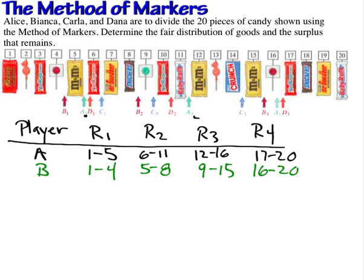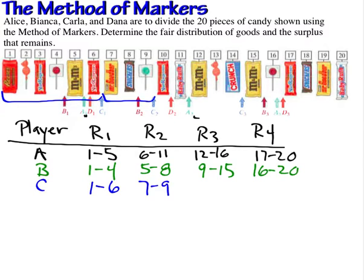Now we look at the next player, Carla. Carla's markers for round 1 include items 1 to 6. For round 2, Carla will accept items 7 through 9. The next fair share for Carla is items 10 through 14. And the final fair share is items 15 through 20.